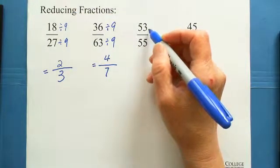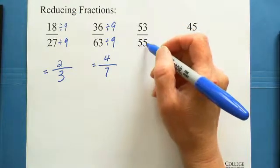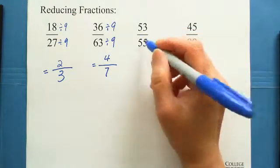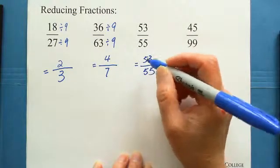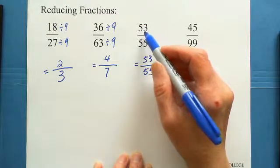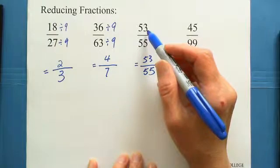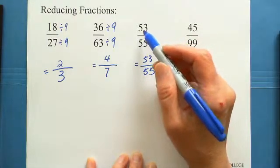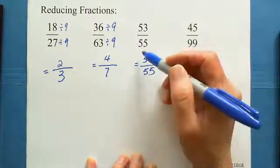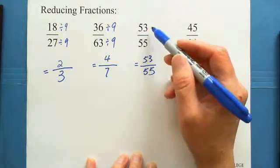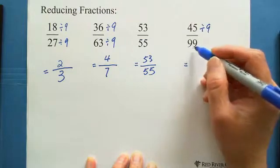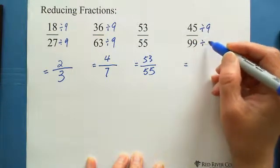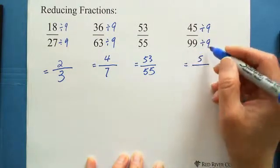For 53 over 55: 5 plus 3 equals 8 — not divisible by 9. And 5 plus 5 is 10 — not divisible by 9. So this one is not working. The answer stays 53 over 55. Also, 53 is a prime number, so only 1 and itself are factors — no other factor applies. Even though 55 can be divided by 5, 53 cannot. For 45 over 99: 4 plus 5 equals 9 — divisible by 9. And 99 is double 9 — also divisible by 9. So 45 divided by 9 equals 5, and 99 divided by 9 equals 11. The answer is 5 over 11.